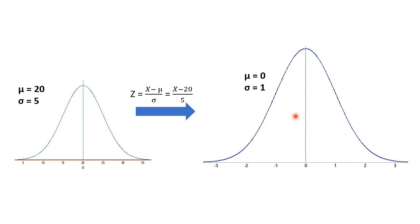If x is 15, then we get a value of negative 1. And it will be 1 if x is 25. If we do this for each x value, you can see that we end up with the same values as the standard normal distribution.